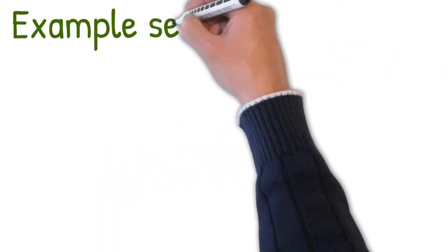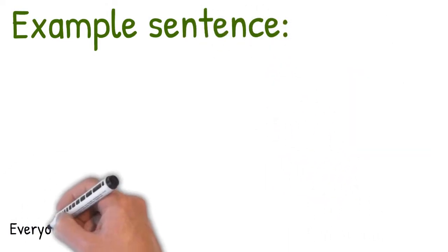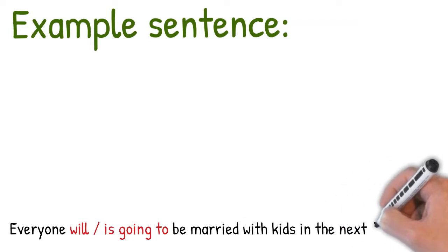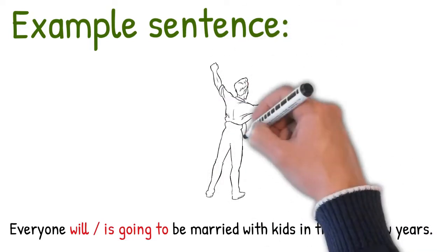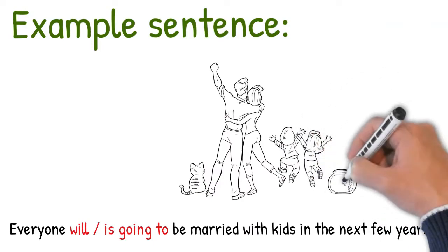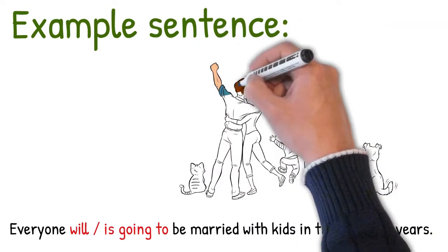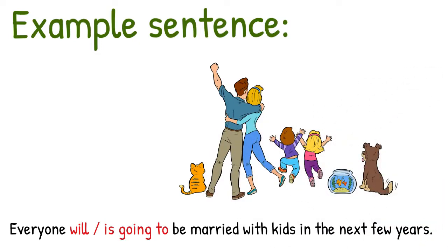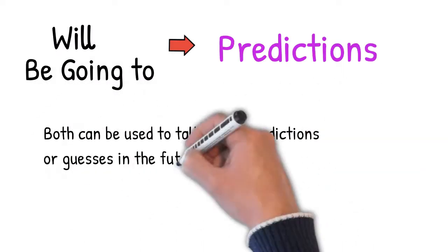Here's an example sentence that uses both will and be going to correctly. Everyone will be married with kids in the near future. Or everyone is going to be married with kids in the next few years. This is general distant plans, because most people plan to get married and have kids. But it could be a prediction too, which brings me to the next thing.